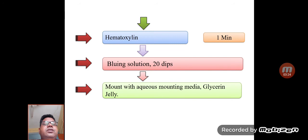Nuclear staining is done using hematoxylin. The slides are kept in hematoxylin solution for one minute, after which bluing is done by acid alcohol with 20 dips.